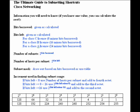Now that you know the bits borrowed and the bits left, you can determine the number of networks or subnets that can be created. That is 2 raised to the power of the bits borrowed, so 2 to the bits borrowed. The number of hosts per subnet is 2 raised to the bits left, or 2 to the bits left.